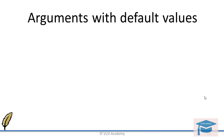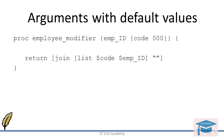Now we will see the proc with arguments that have a default value. Default value means if you are not supplying a value for that particular argument, the function will not error out but will take the default value instead. Consider the case where your manager wants to add a code to every employee ID rather than just one. If a code is not supplied, it should add a default value of 000. The function is exactly the same but with one more argument — code — which has a default value of 000. When joining, it takes the code and joins it with the employee ID. So if your code is 123 and employee ID is 456, it will join to 123456 as the new employee ID.